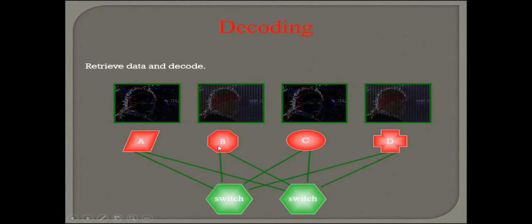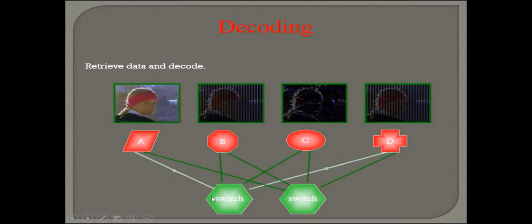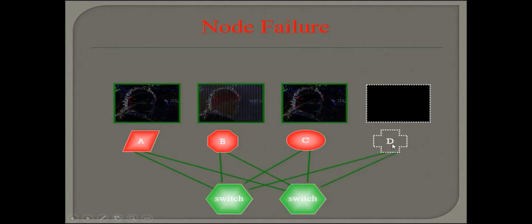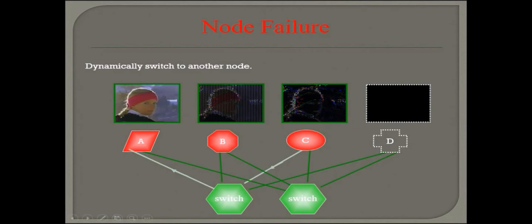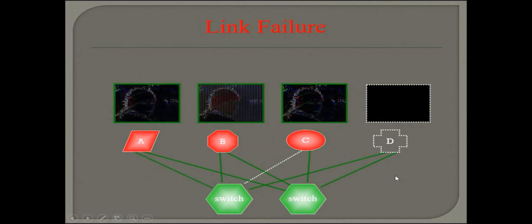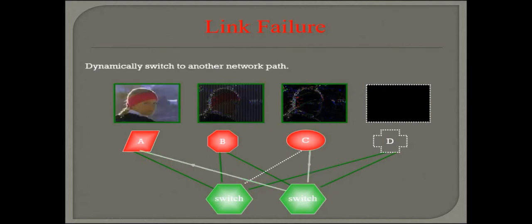As we go ahead, we decode, retrieve data, retrieve data, and decode. What if some node fails? If the node fails, we dynamically switch to another node.